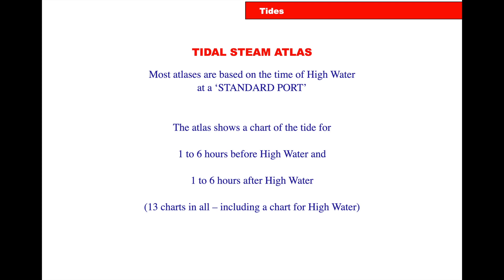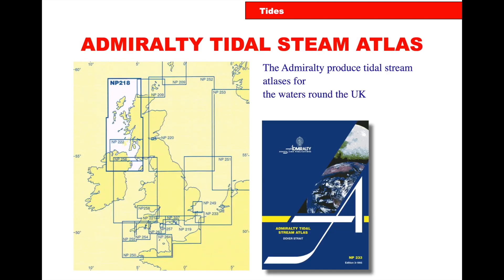The tidal stream atlas is mostly based on the time of high water at a standard port. The atlas shows a chart of the tide for 1–6 hours before high water and 1–6 hours after high water — 13 charts in all, including a chart for high water. The Admiralty produces tidal stream atlases for waters in and around the UK, and we can see the details of these atlases around the UK on a chart.